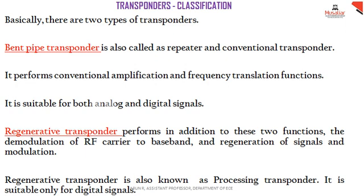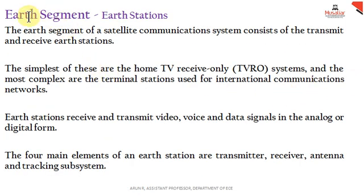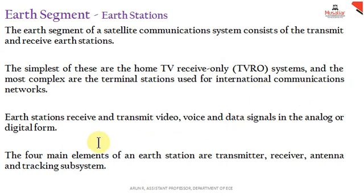Coming to our next topic — the ground segment or ground station. In a satellite communication system, the ground segment consists of the transmit and receive ground stations. The simplest of these is TVRO, that is home TV receive only. The most complicated terminal stations are used for international communication networks. These ground stations receive and transmit different types of signals such as video, voice, and data signals in both analog and digital form. The four major elements of a ground station are: transmitter, receiver, antenna, and the tracking system.